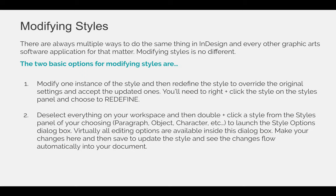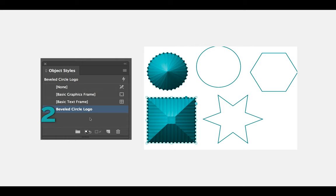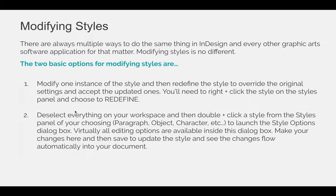The better option, in my opinion for people just getting started with styles, is to deselect everything — make sure nothing on your workspace is selected — and then double-click the style you wish to modify from the styles panel. In our case, we're going to modify an object style, so you would double-click Beveled Circle Logo and it would launch a dialog box that allows you to make changes for that style.